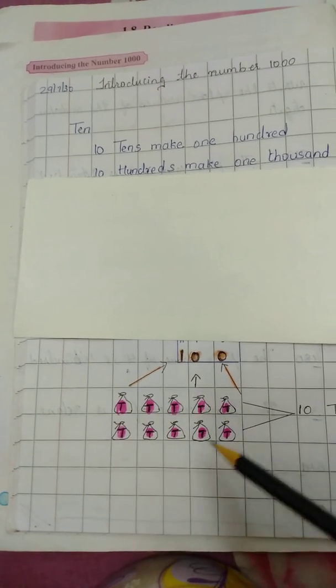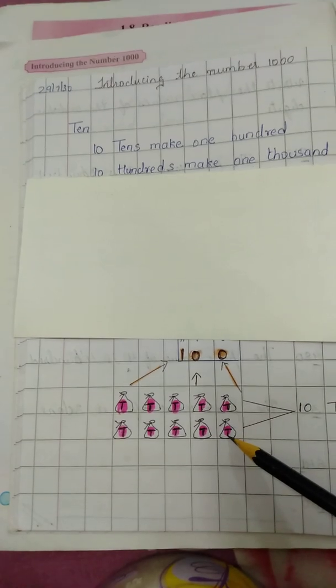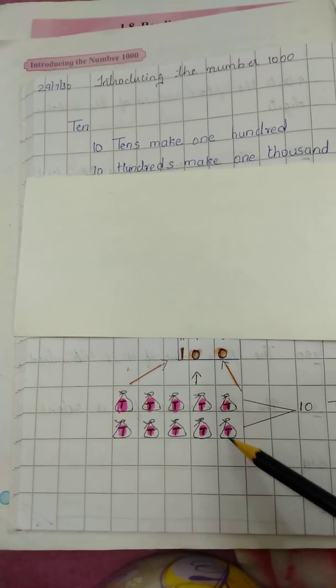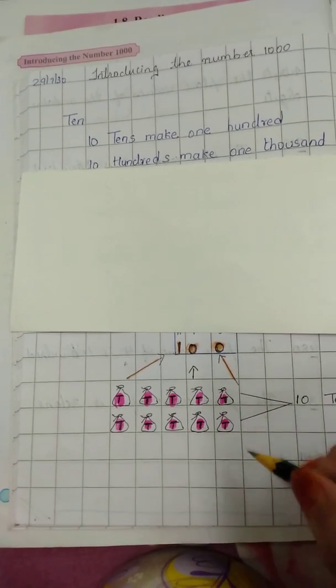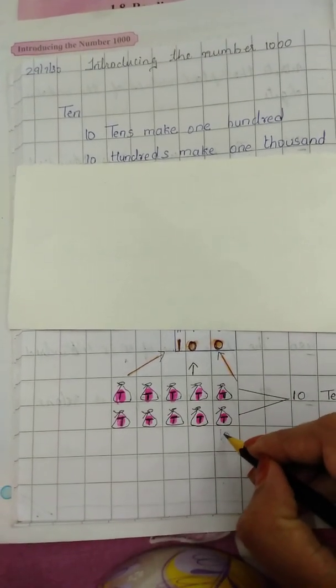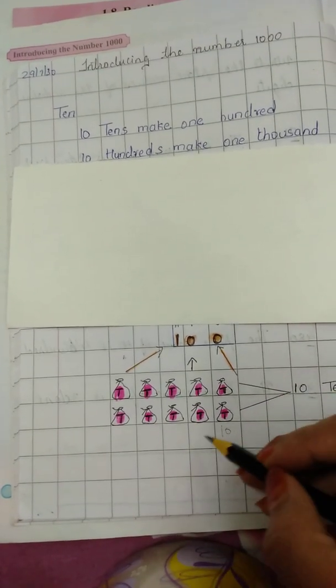Yeh kya hai? Ye 10 pockets hain, jisme sab mein 10 beads hain. Har ek mein 10 beads hain. Yeh samajh lijiye ye 10 one-rupee coins hain. Toh ek mein kitna hua? It is 10. Toh aise 10s kitne hain? 10 hain.